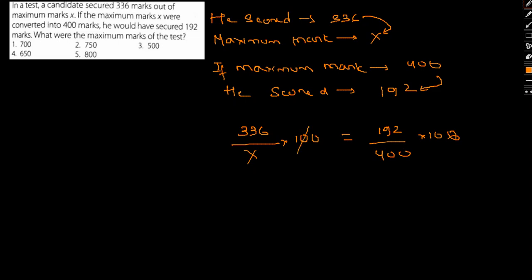So 100 and 100 gets cancelled out. 336 and 400, so if we go through the same, what we can get is x equal to 336 into 400 by 192. So if we cancel this out, 100.